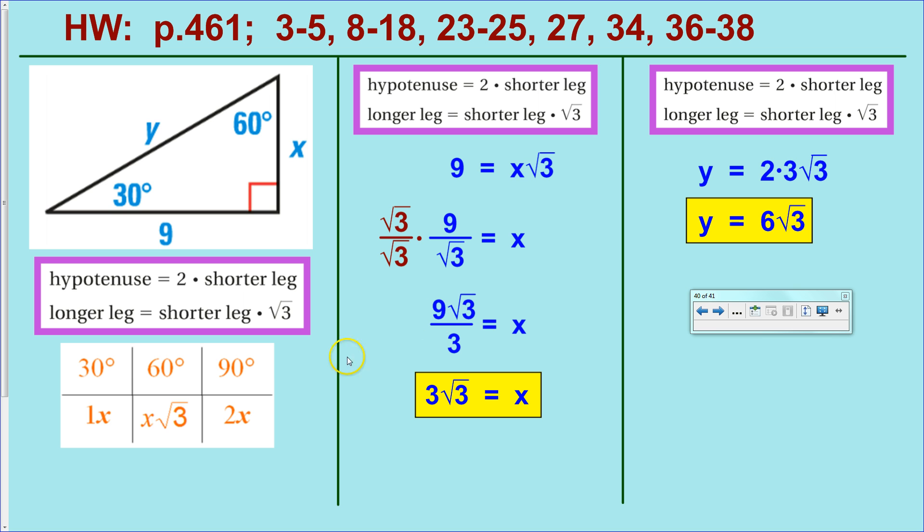I want to point out, very quickly, that you could have done this using the table as well. The stuff you know about is this 60 degree angle and this length of 9 opposing it. So, you look at your 60 degree angle and you know that that 9 should be the same as this x times the square root of 3. So, you set 9 equal to x times the square root of 3. And, look, you get the same equation. You have the same issue with rationalizing the denominator. And, you get the same answer. At the top, you'll find your homework assignment. I'll see you next time.